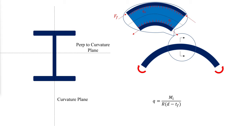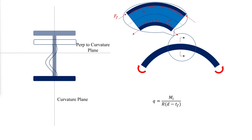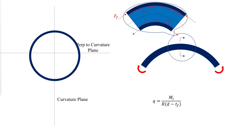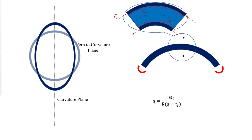The radial flange force components can cause local bending of the flanges and local buckling of the web. The radial load effects are similar for other members with flat cross-sectional elements. For round hollow sections, radial forces can cause ovalization, reducing the strength and stiffness.